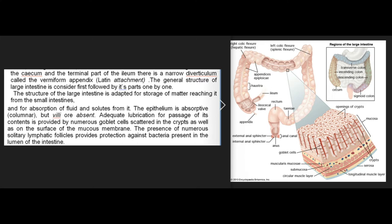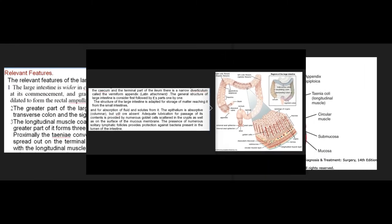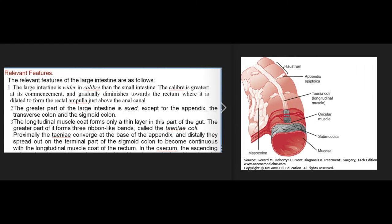The structure of the large intestine is adapted for storage of matter arriving from the small intestine and for absorption of fluid and solutes. The epithelium is absorptive columnar but villi are absent. Adequate lubrication is provided by numerous goblet cells in the crypts and on the surface of the mucous membrane. The presence of numerous solitary lymphatic follicles provides protection against bacteria in the lumen.